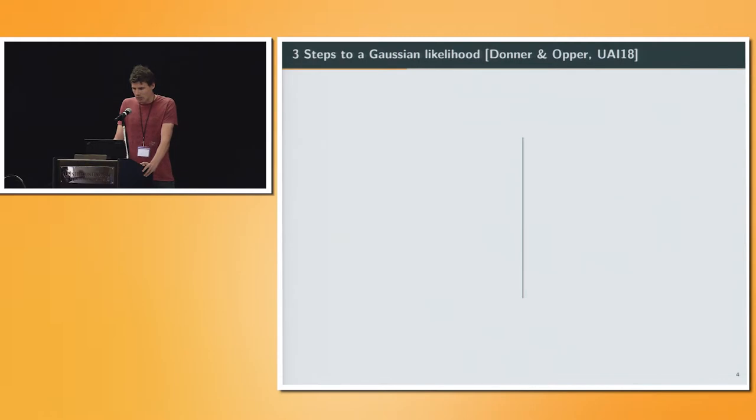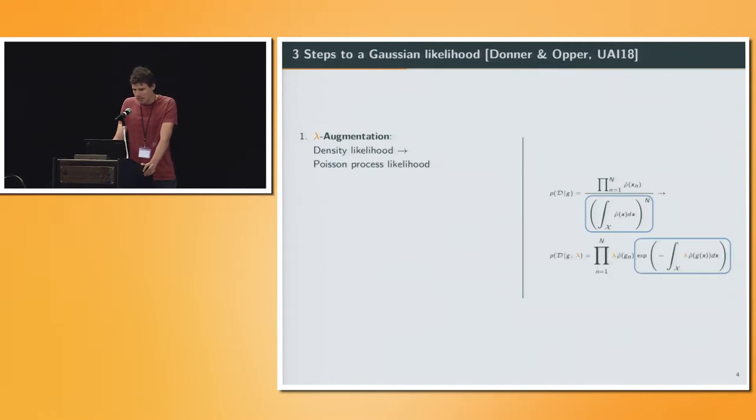I will go through the steps here, but I will not go into details. If you're interested, look at the paper. The first one is the lambda augmentation, where we basically care about the denominator in the likelihood. We can transform the density likelihood by this lambda augmentation into a Poisson process likelihood, where we basically pull the integral from the denominator into an exponent.